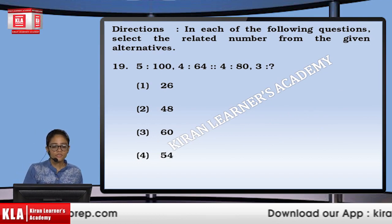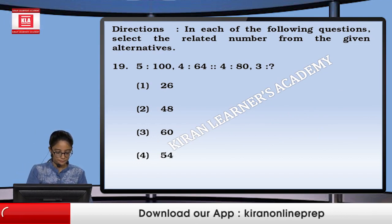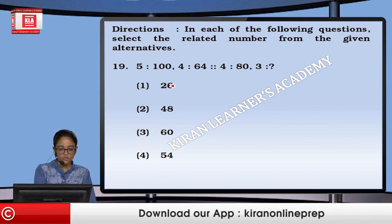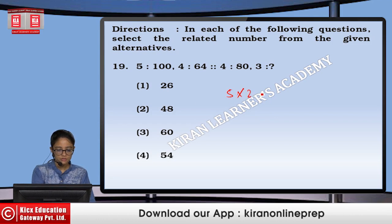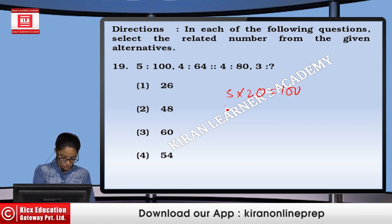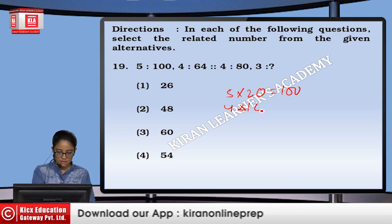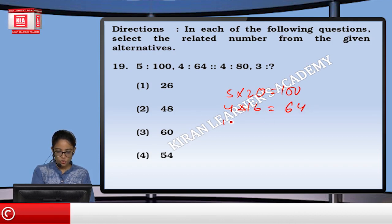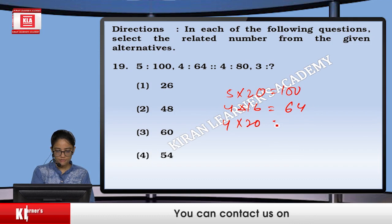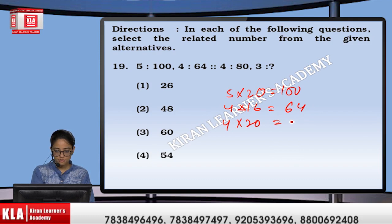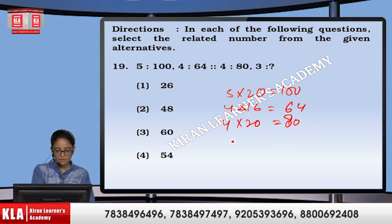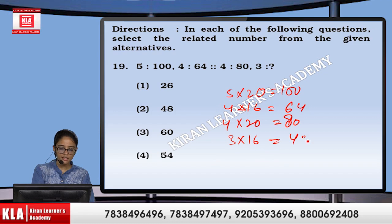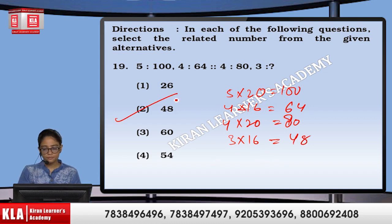Next, 5 is to 100. So, 5 into 20 gives you 100. Similarly, 4 into 16 gives us 64, and 4 into 20 gives us 80. Similarly, 3 into 16 gives us 48. So the option will be the 2nd one.